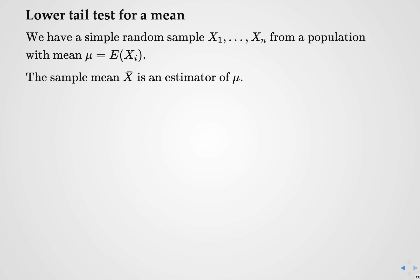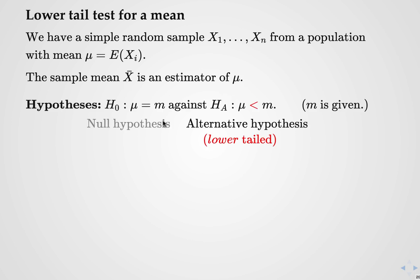Now we can move on and talk about lower-tailed testing for a mean. The concepts here are pretty much exactly the same as for upper-tail testing. It's just that we need to switch a few things around from the upper tail to the lower tail. So the starting position is the same: we have a simple random sample drawn from a population with a mean of mu that we want to know about, and we have a sample mean estimating that population mean.